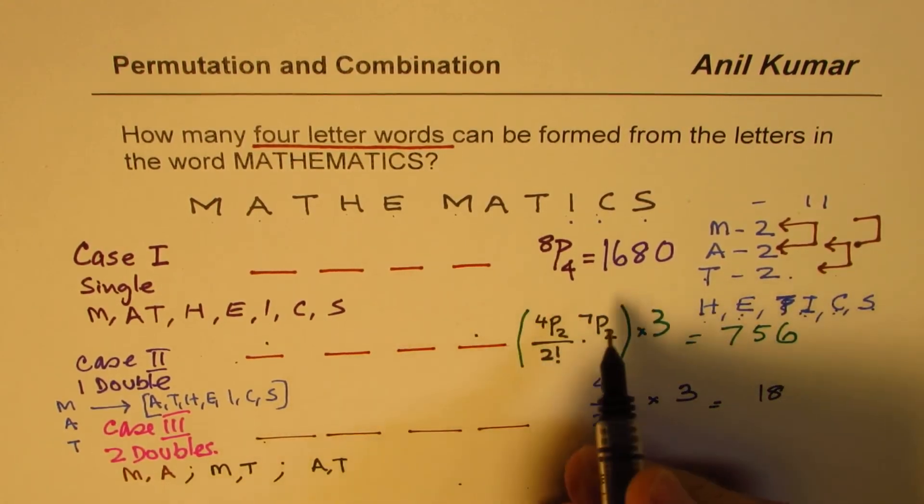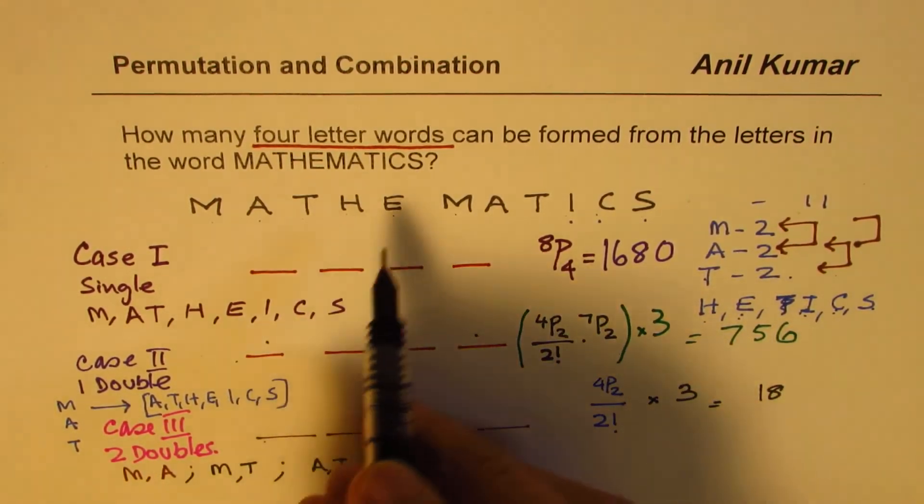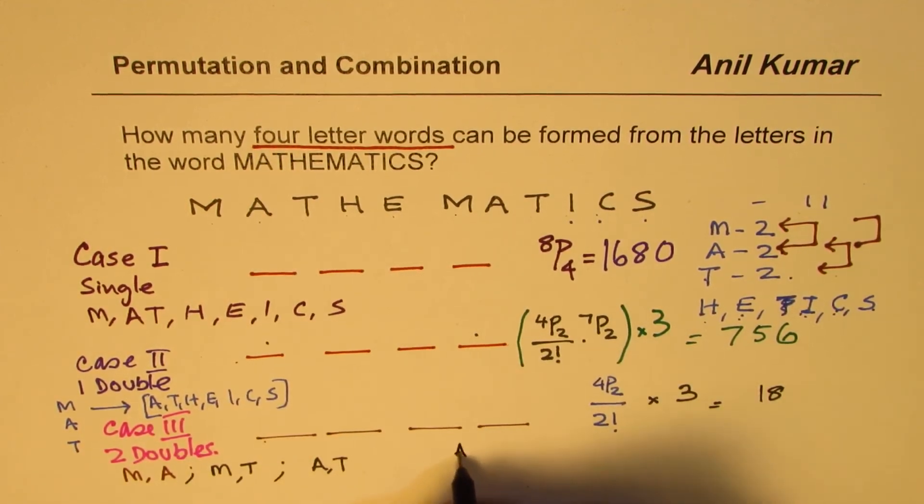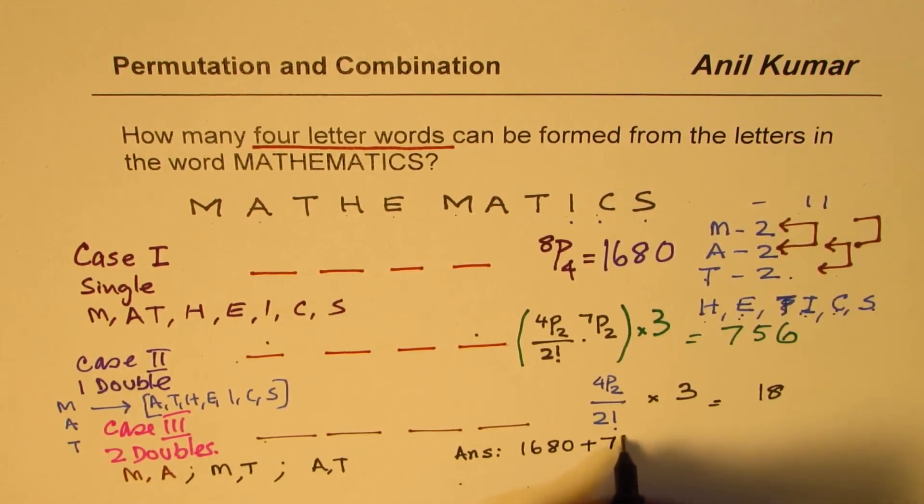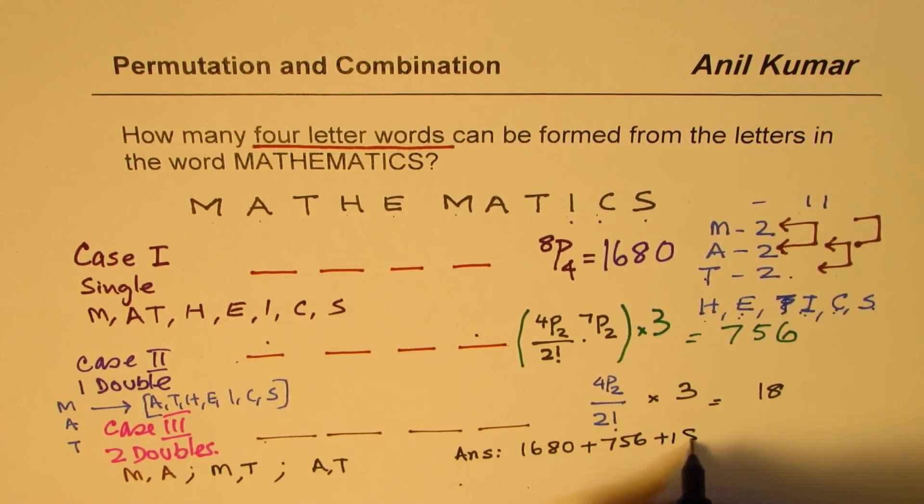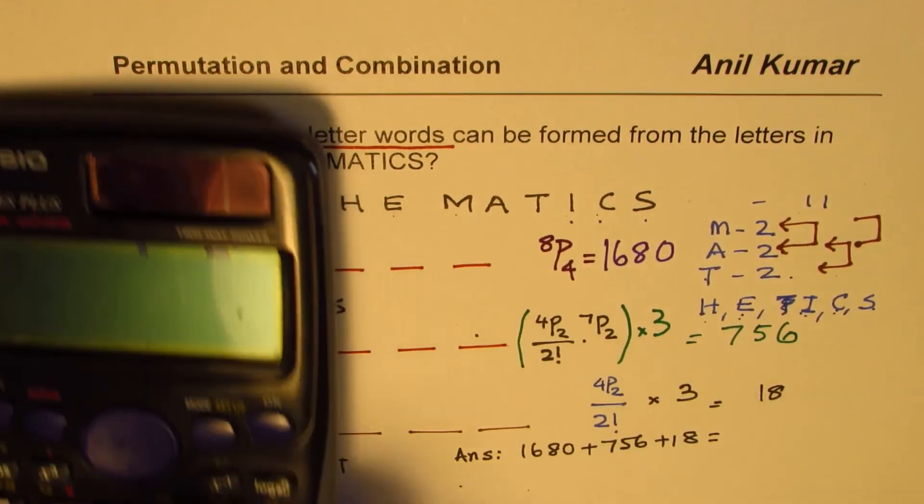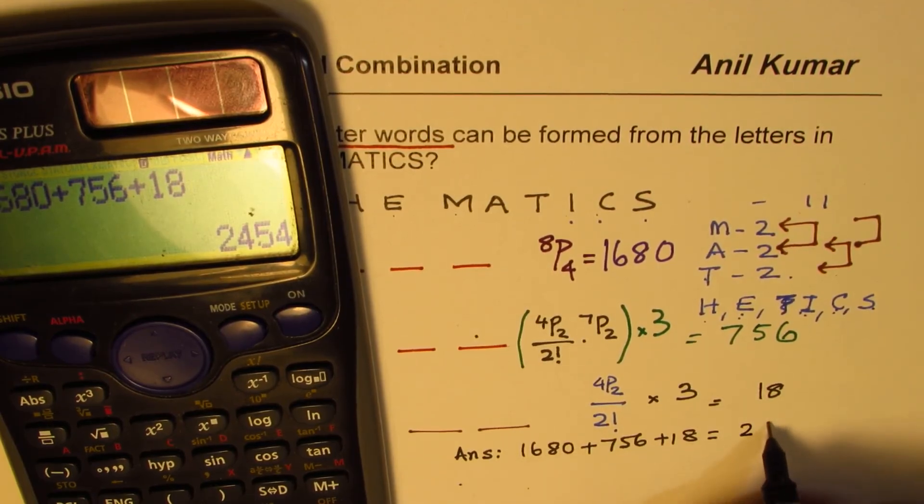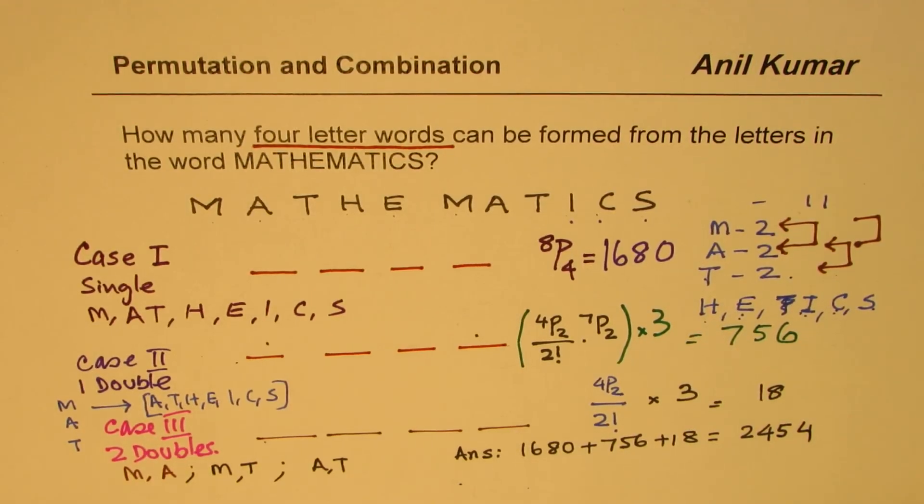So adding them all gives us total number of words which can be formed, total four letter words which can be formed. So the answer will be equal to 1680 plus 756 plus 18. 1680 plus 756 plus 18 equals to 2454. So that is how using permutations you could answer this question.